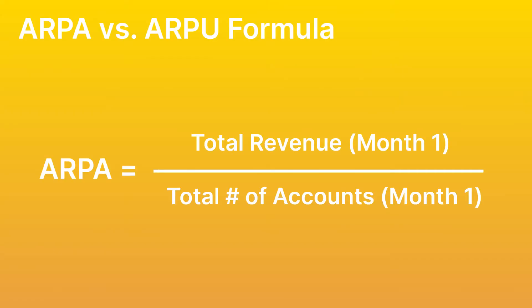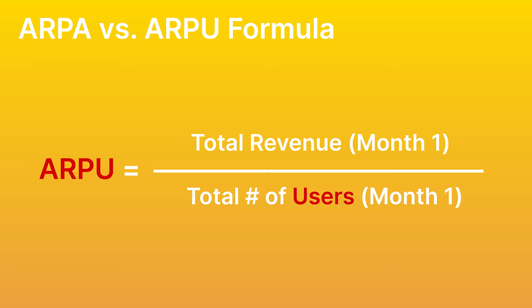The formula for calculating these metrics is essentially the same for both. To calculate ARPA, you divide the total revenue over a period of time by the total number of accounts during that same period. For calculating ARPU, you just substitute accounts for users.